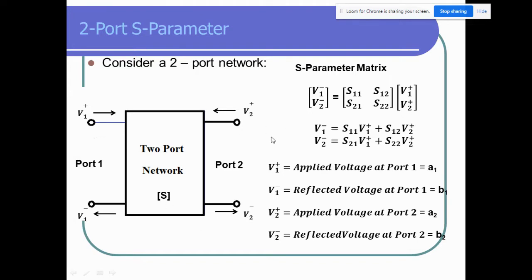Connecting to the last video, I already mentioned that S-parameters make things simpler by taking current away from the equation, replacing currents and voltages with different types of voltages. Anything which is a-plus is called the applied or incident voltage, and anything which is negative — reflecting back — is called the reflected voltage.